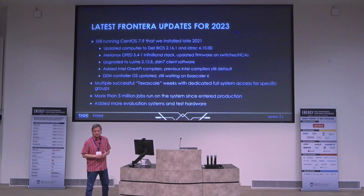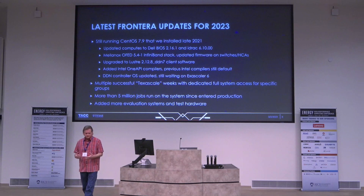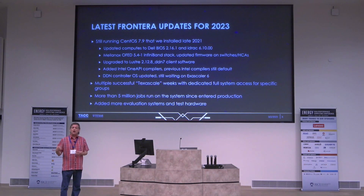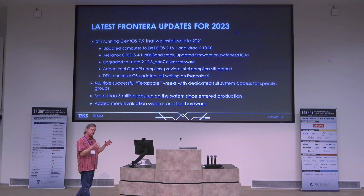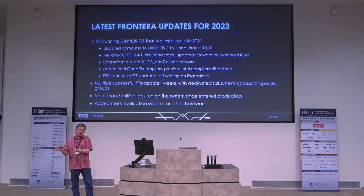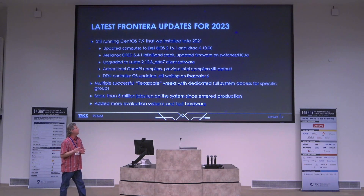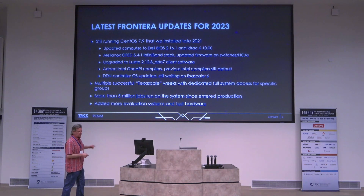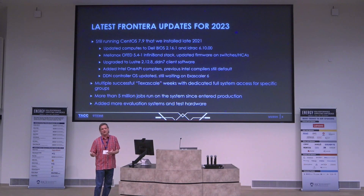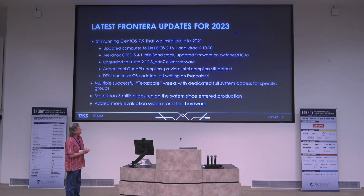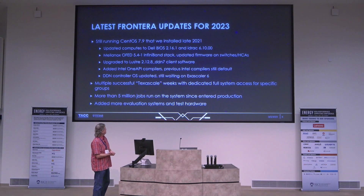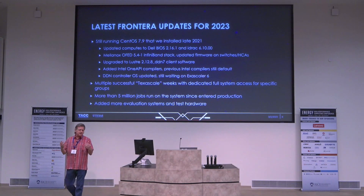We've also been working with DDN to keep up to date on the DDN software. We run the ExaScaler appliance versions of the DDN hardware, so Lustre runs on the controller itself. There are two components that get updated — the controller OS and the ExaScaler Lustre server version. We had to upgrade the controller versions but held off on ExaScaler because they found some bugs and didn't want us to deploy. We are working on deploying the latest Lustre server versions later this year.